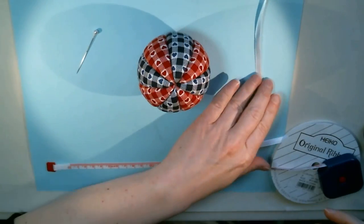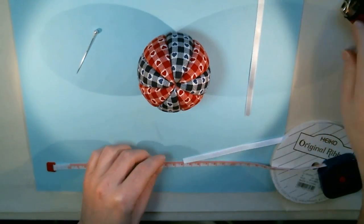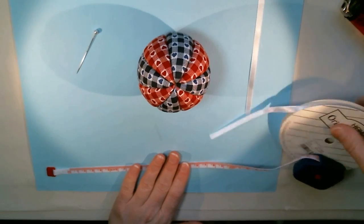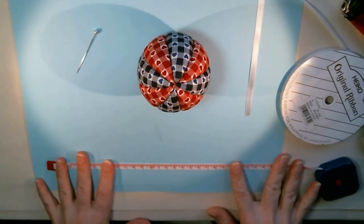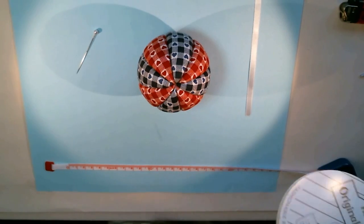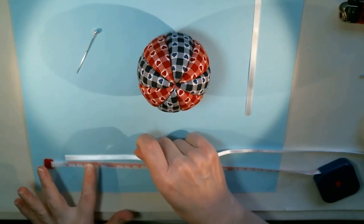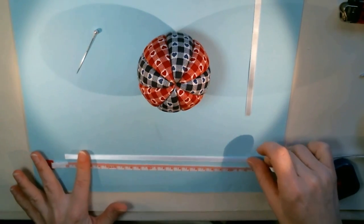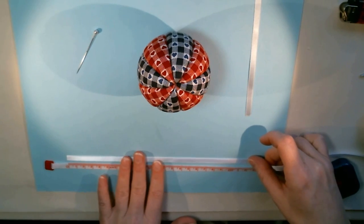For this ball, since I have eight sections on my ball, I'm going to make an eight loop bow. And for each two loops I need 20 centimeters of ribbon, so for this bow I'll use four pieces of 20 centimeter ribbon.